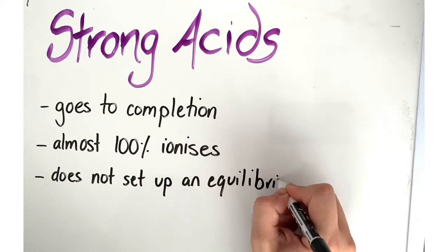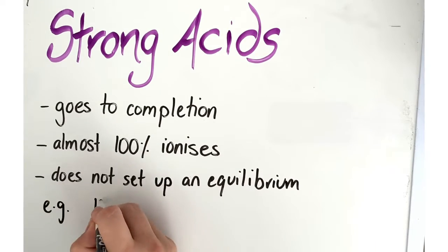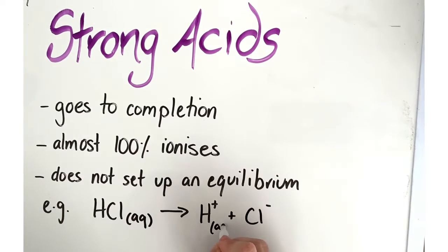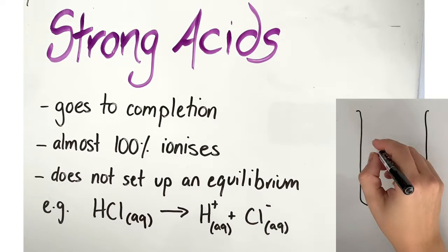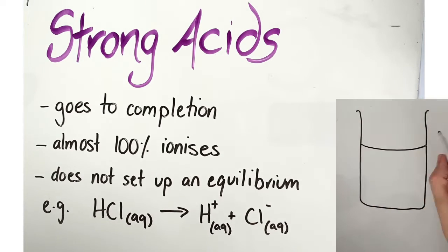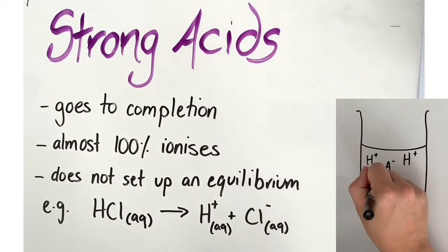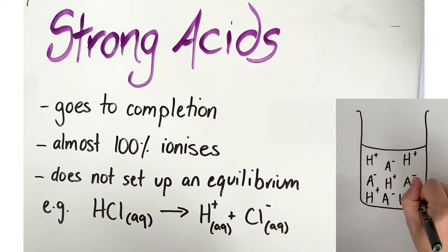For example, when hydrogen chloride dissolves in water to make hydrochloric acid, so little of the reverse reaction happens that we can write HCl gives hydrogen ions and chloride ions. You'll see here that we didn't use an equilibrium symbol; we used an arrow denoting that this chemical reaction goes to completion and does not set up an equilibrium.